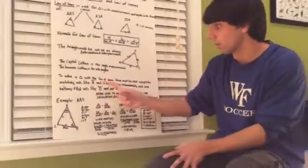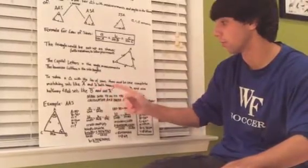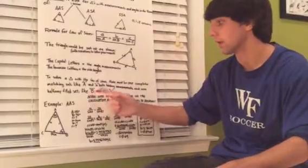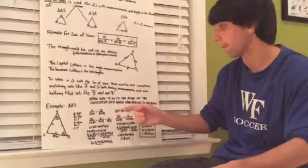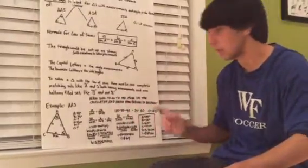To solve a triangle with the law of sines, there must be one complete matching set, like capital A and lowercase a both having measurements, and one halfway filled set, like capital B having a measurement, but not lowercase b. Make sure to go to the mode on the calculator and switch from radians to degrees. That's very key here.